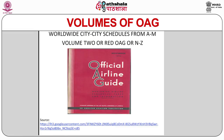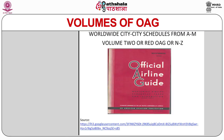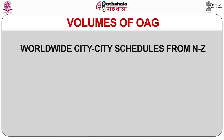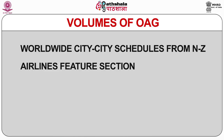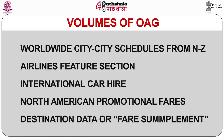The second is the Red OAG — Volume 2 — covering details from N to Z. As this volume has all airports starting from alphabets N to Z and is red in color, it is known as Red OAG. Its main sections include: Worldwide City-City Schedules from N to Z, Airlines Feature Section, International Car Hire, North American Promotional Fares, and Destination Data or Fare Supplement.